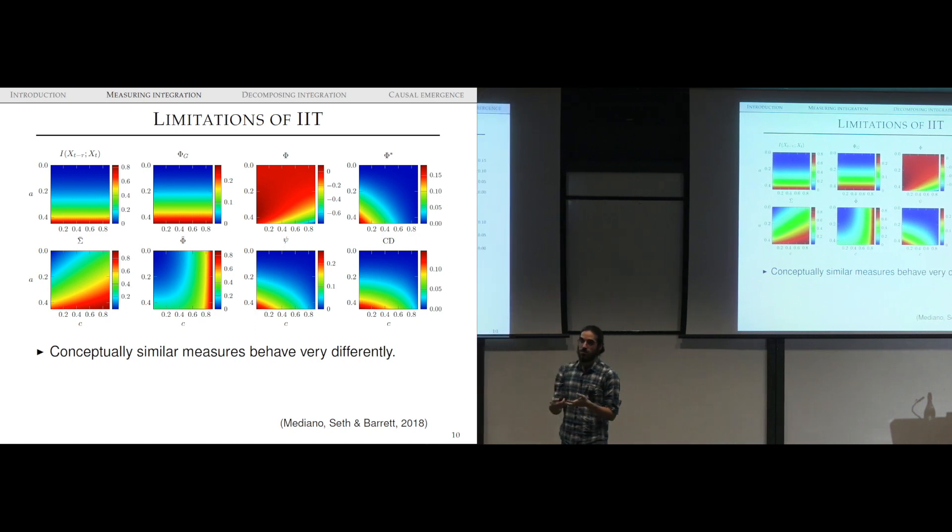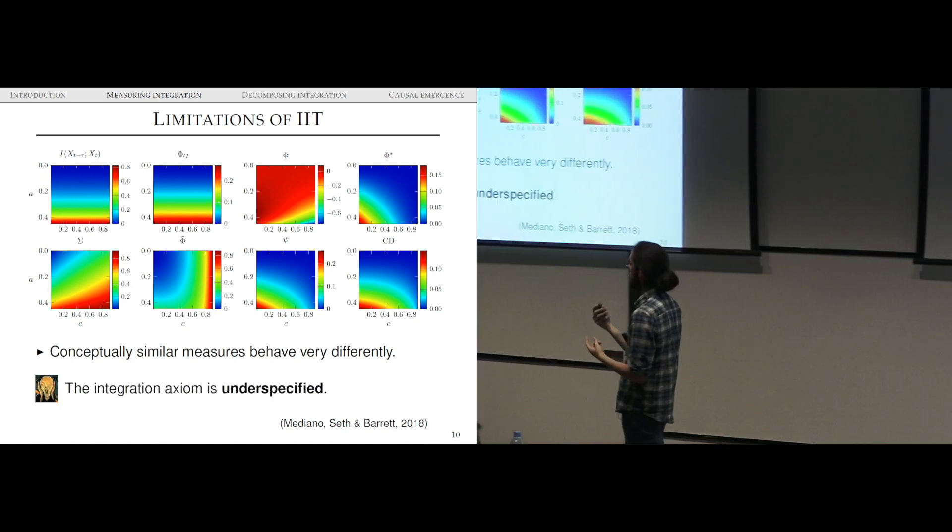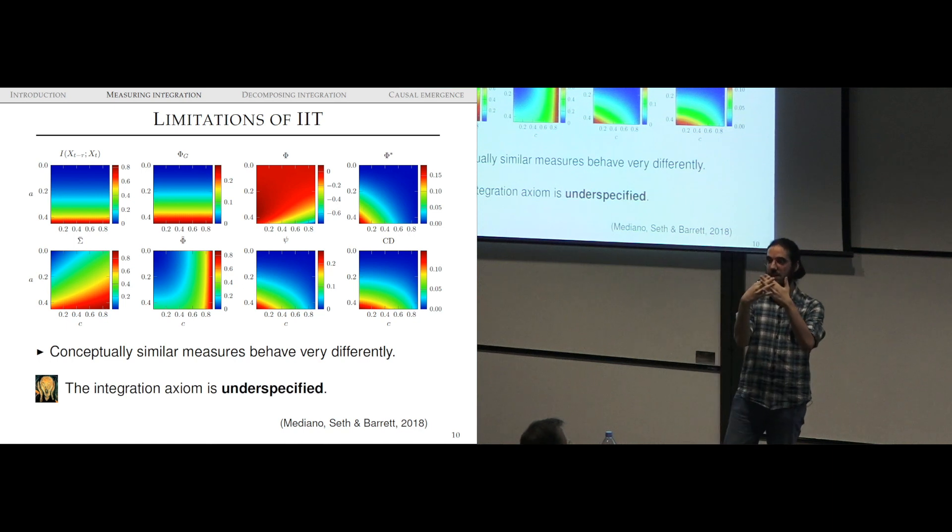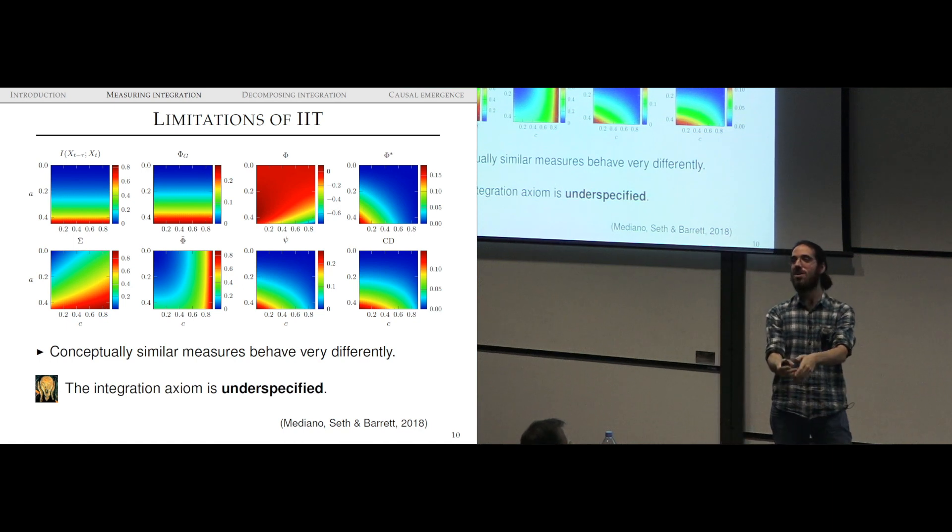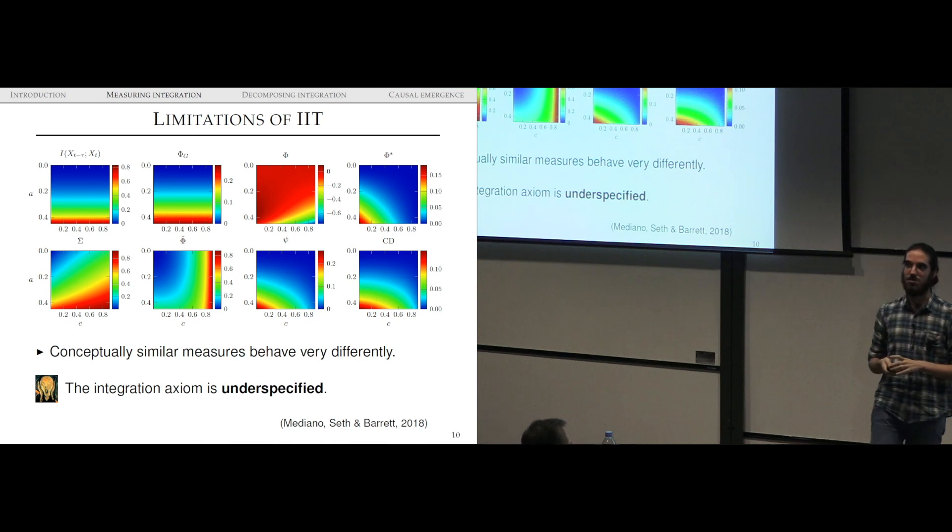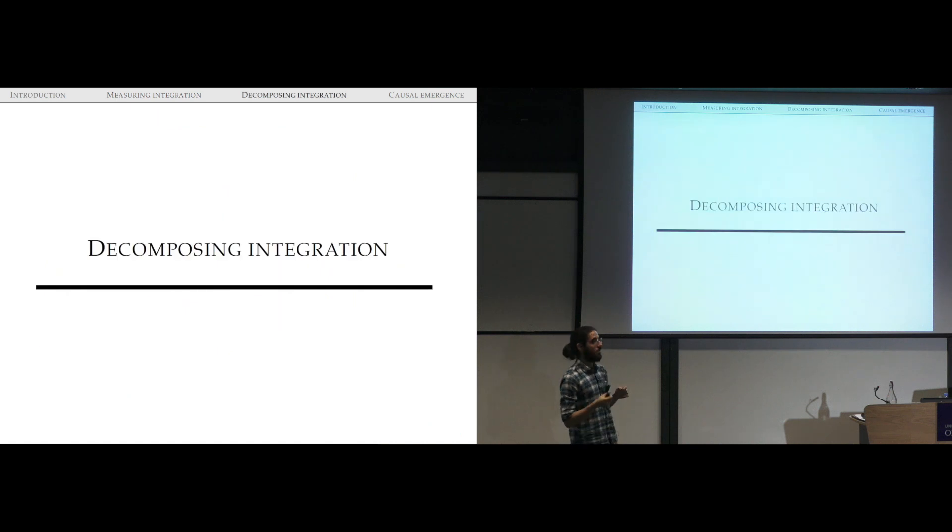They don't agree. It's not that they have slight numerical differences, they're just all over the place. These things are capturing genuinely different aspects of how this system is integrated. They're not approximations to the same thing, they're different stuff. We can do the same thing if we put coupling on one axis and correlation on the other. Again, measures all over the place. Conceptually similar measures behave very differently. The conclusion I draw from this is that the integration axiom is underspecified. We need to put something else to say exactly how I want things to be integrated.